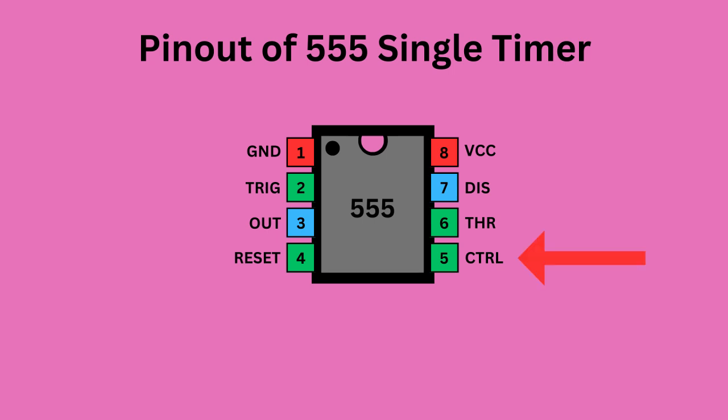Pin 5 serves as the control pin, enabling you to adjust the threshold voltage levels used by the internal comparators to set and reset the flip-flop.